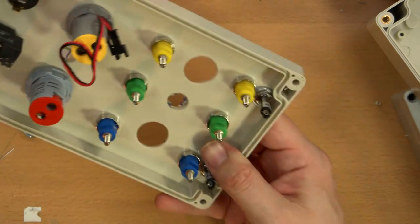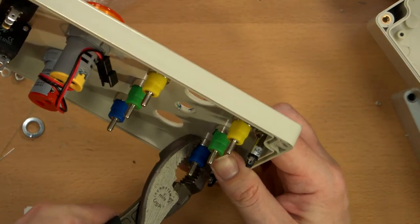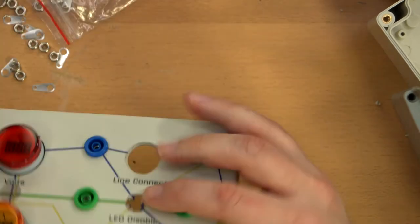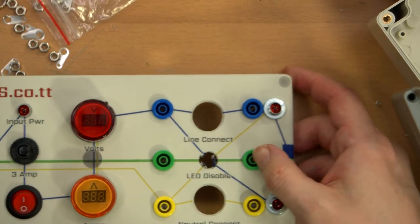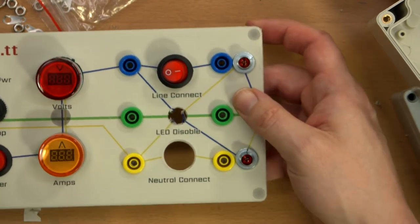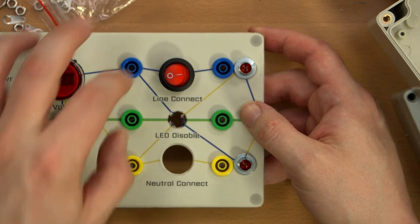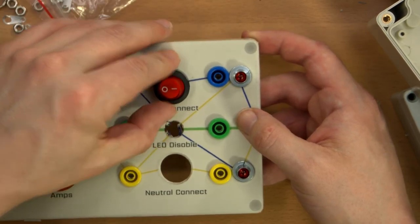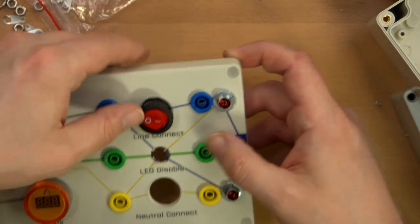Wait, I got distracted. Okay, cool. Sweet. All right, and then these switches are going to be used for line and neutral connect so that you don't have to jumper across these. You can just switch these on and then current will flow through the box as you know, one would expect under normal circumstances.